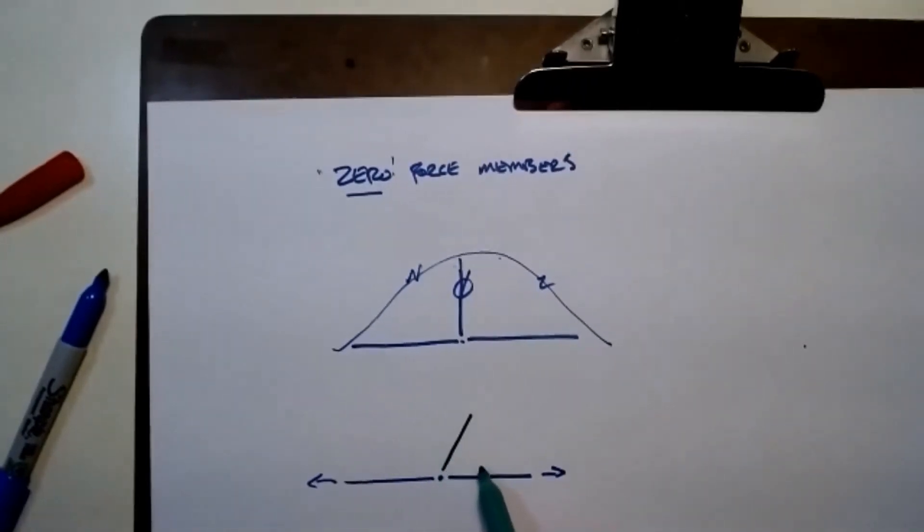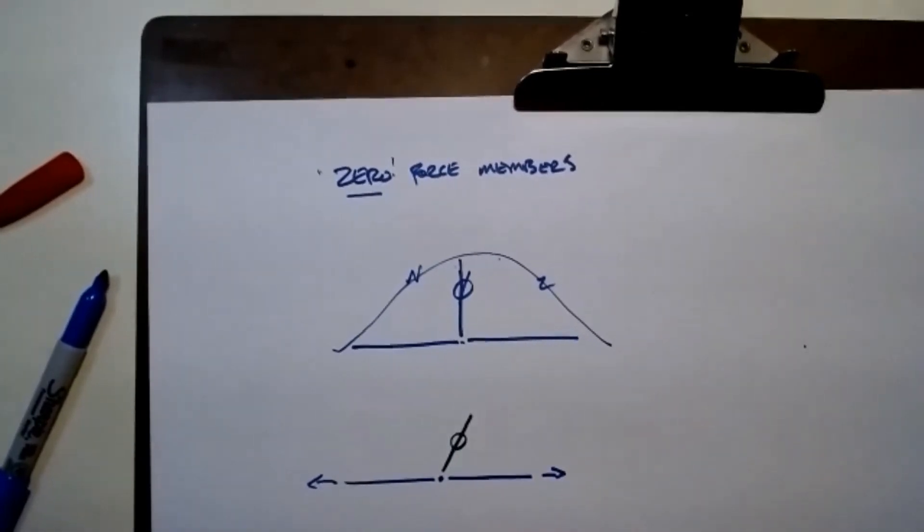So this would be a T joint, even though it's on an angle, there's no load applied at this joint, that would be a zero force member.